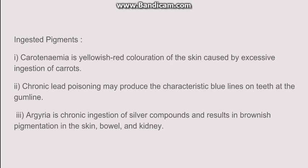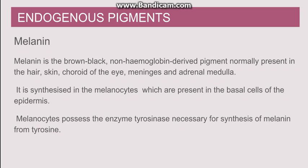Going to the endogenous pigments, we will first discuss melanin. Melanin is a brownish-black pigment mostly present in the hair, skin, choroid of the eye, meninges, and the adrenal medulla. In the skin, it is synthesized by cells known as melanocytes, which are mostly present in the basal layer of the epidermis.